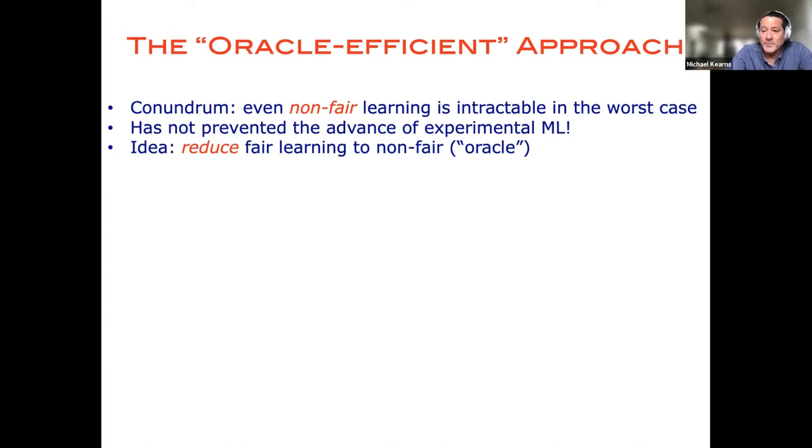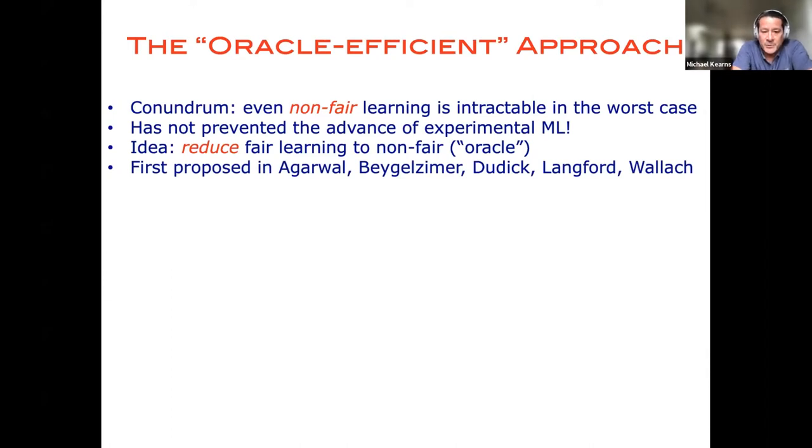And so the idea of the Oracle Efficient Approach is to kind of piggyback on the fact that we know that, at least in practice, real machine learning problems on often complex models can be solved by heuristics that may not be tractable in the worst case, but work surprisingly well in the typical case or in the real world cases. So the idea is to basically assume that we have a subroutine or what's sometimes called an Oracle for solving standard machine learning problems without any fairness constraints, and then show that you can reduce the problem of learning with this or that fairness constraint to the non-fair problem.